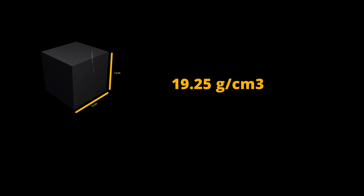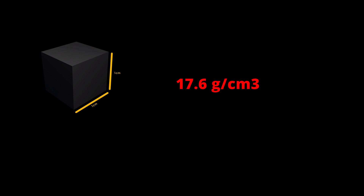At room temperature, tungsten has a density of 19.25 grams per cubic centimeter, and 17.6 grams per cubic centimeter when liquid at its melting point.